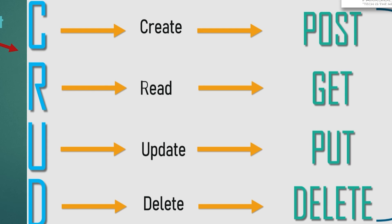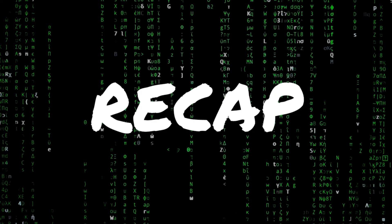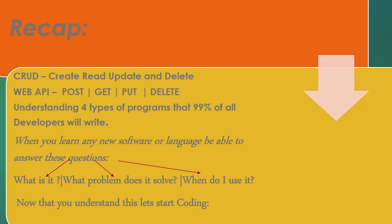Let me just recap. Before you start doing any development or writing code, understand that these four operations are crucial to your success. We talked about CRUD, and we talked about web APIs where you do POST, GET, PUT, and DELETE. You must understand these four types to start writing applications. And always remember those three questions: what is it, what problem does it solve, and when do I use it? Now let's start coding.